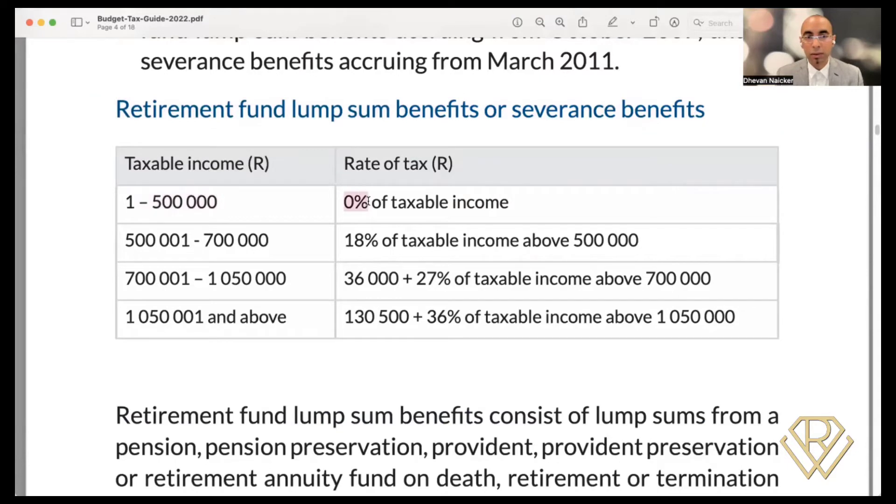And here it is. You'll notice here that the retirement fund lump sum benefits table, this is the table that SARS uses. So the first R500,000, the tax is zero. From R500,000 to R700,000, the tax is 18%. Then it jumps up from R750,000 to R1,050,000. It's R36,000 plus 27% of whatever is more than R1,050,000. And from R1,050,000 upward, you'll see it's R130,500 plus 36% of whatever is more. Now, using our example, the R1,000,000 rand slots into this category here. So because it's in that category, what is the tax? It's R36,000 plus 27% of whatever is more than R700,000.